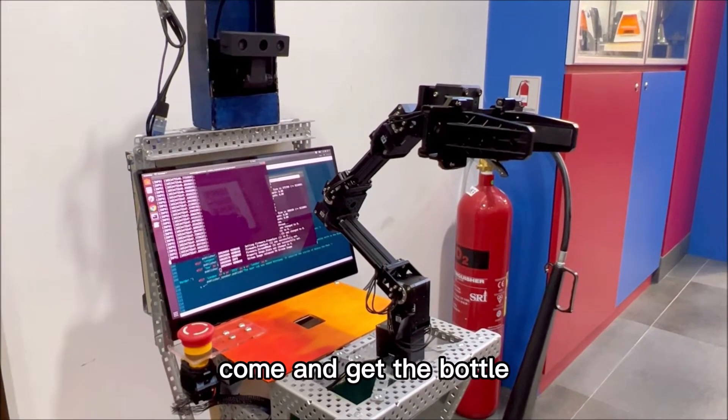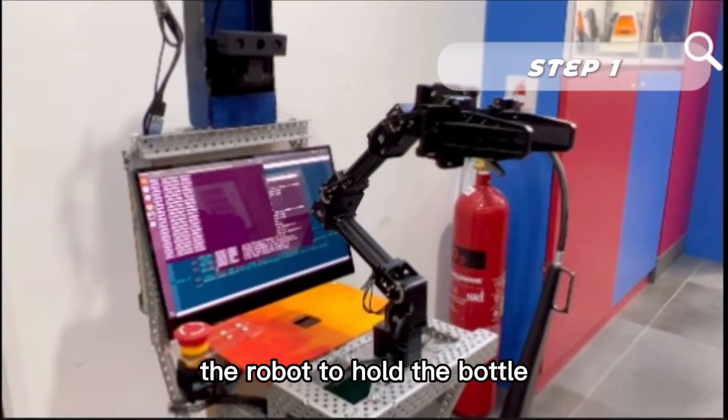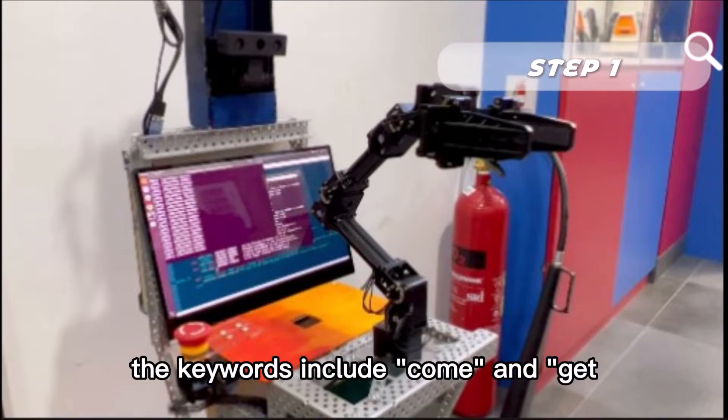Come and get the bottle. Firstly, the operator should ask the robot to hold the bottle. The operator should say the keywords we have set up. The keywords include come and get.